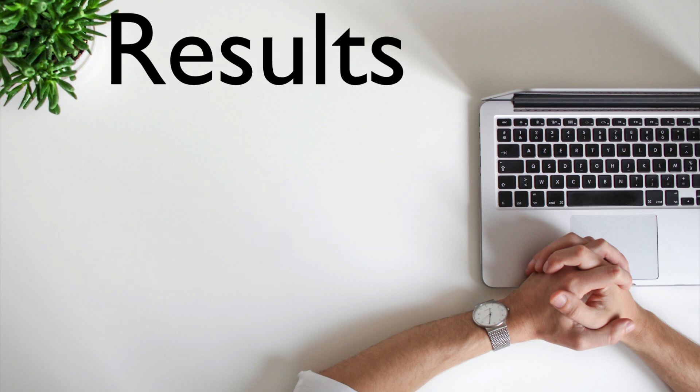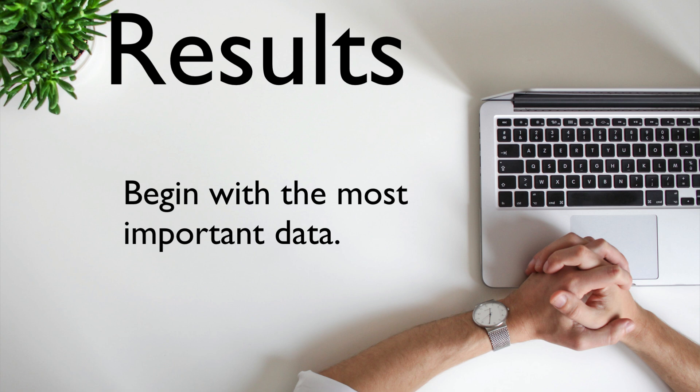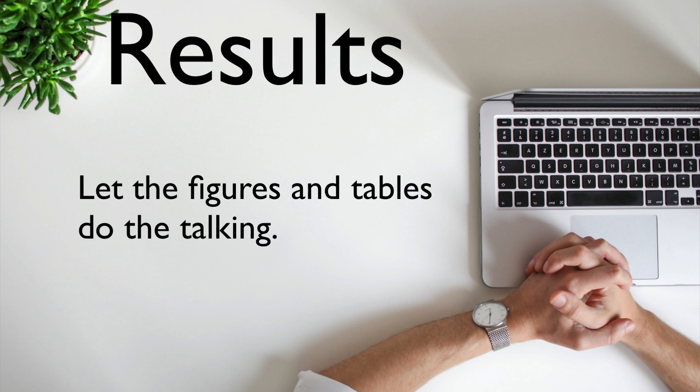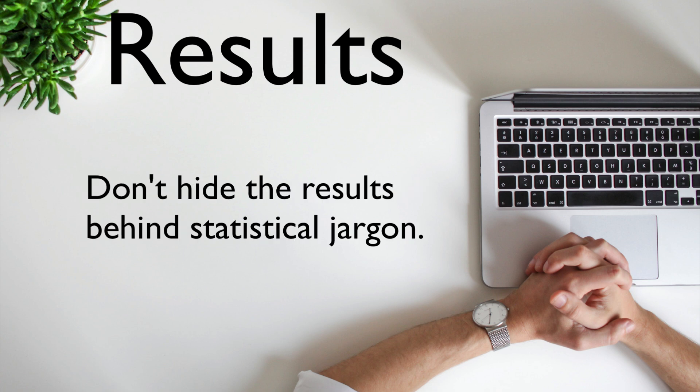Next is the results section. Be selective and include only those results that show something relative to your main questions or hypotheses—put the rest in supplementary materials. Be systematic and organize the results by topic or experiment. Start with your most important data, not problems encountered during the study. Let the figures and tables do the talking. In the text, summarize the main patterns in the data and provide information not readily apparent in the tables and figures. Don't hide your results behind statistical jargon; instead, describe what happened and use statistics to support your statements.